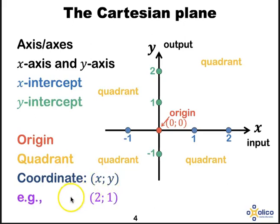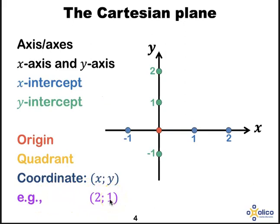And let's now have a look at how we will plot the point 2, 1. Let's just get rid of some words so we've got some space. The point 2, 1 is over here.